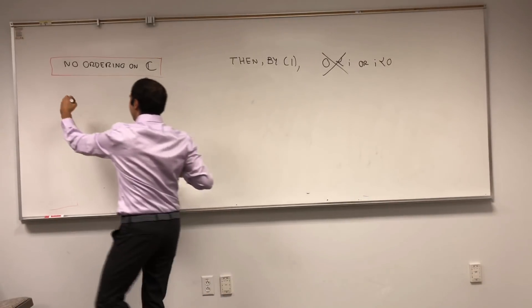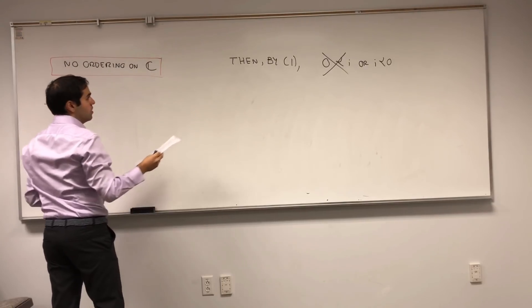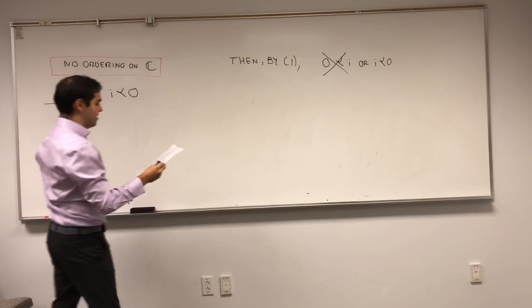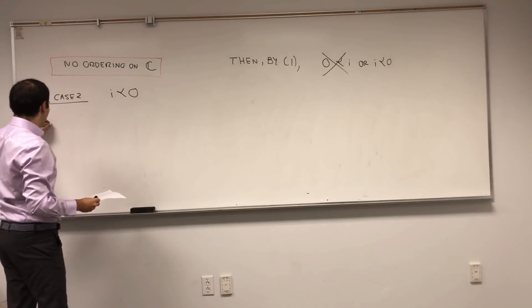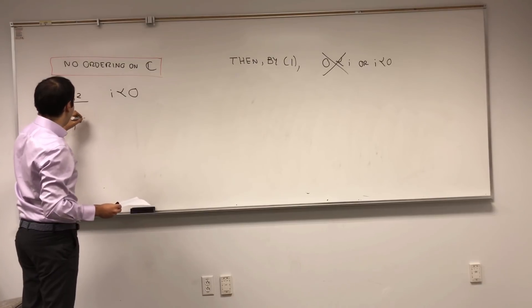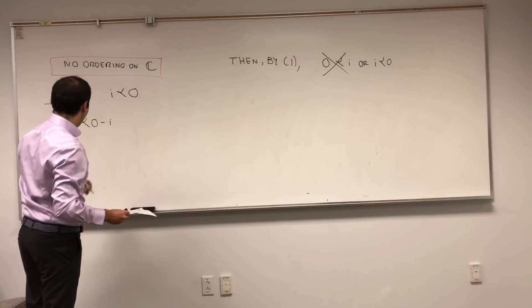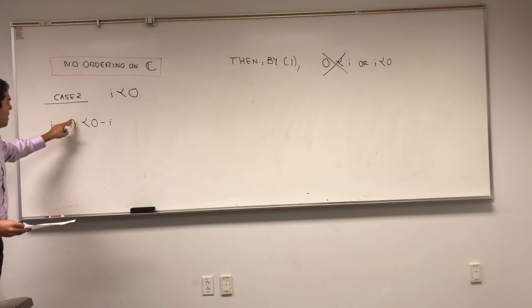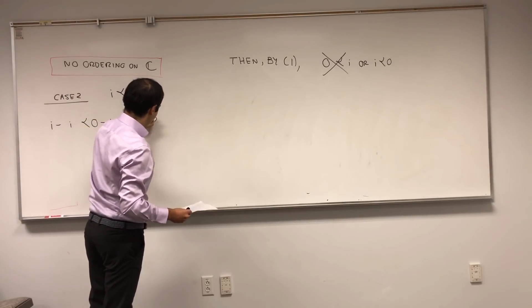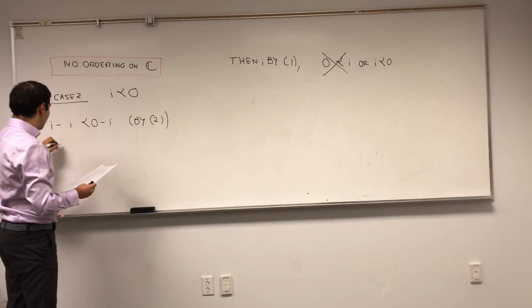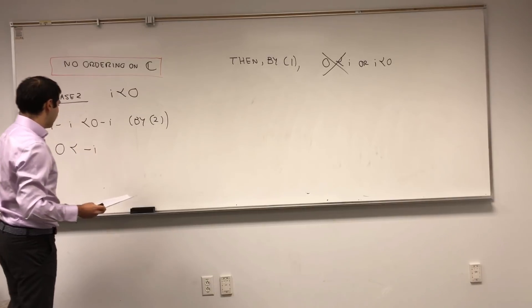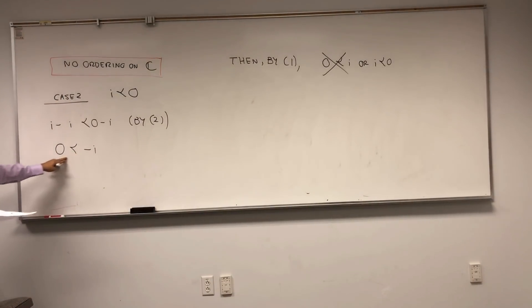Case 2: suppose i is less than 0. Then one thing we can do is subtract i from both sides. So i minus i is squiggly less than 0 minus i — valid by property 2, since subtracting i is just adding minus i. We get 0 is strictly less than minus i. This is great, because now minus i is a positive complex number, so we can use property 3.